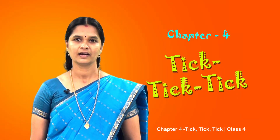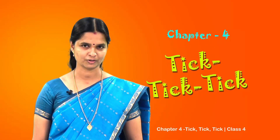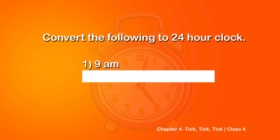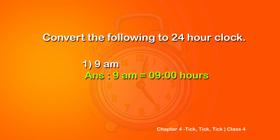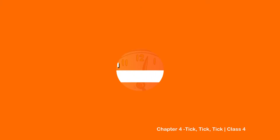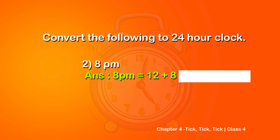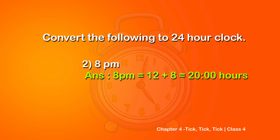Let us convert some times from twelve-hour clock to twenty-four hour clock. First question: nine AM. The time is in AM - morning nine o'clock - so no change: nine AM equals nine hours. Second question: eight PM. It is PM, eight o'clock at night, so we add twelve: twelve plus eight equals twenty. Therefore eight PM equals twenty hours in the twenty-four hour clock.